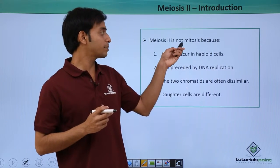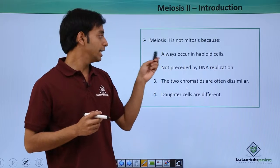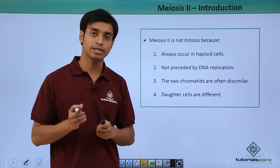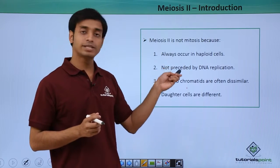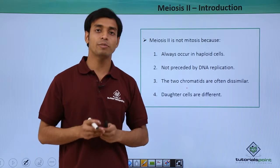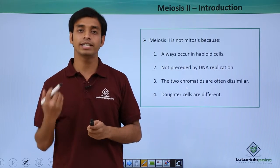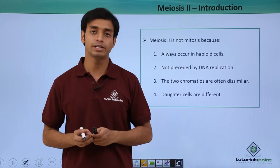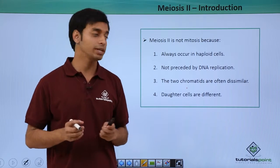Now, Meiosis II is not absolutely mitosis because it always occurs in haploid cells not preceded by DNA replication. In case of mitosis, we know that it is preceded by DNA replication, but Meiosis II is not preceded by DNA replication.